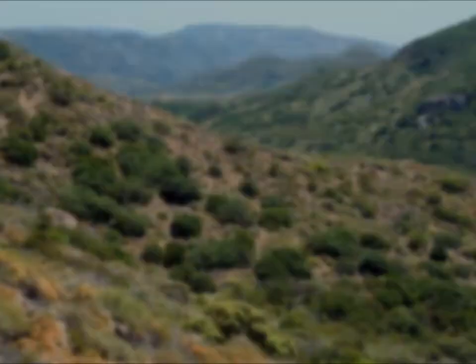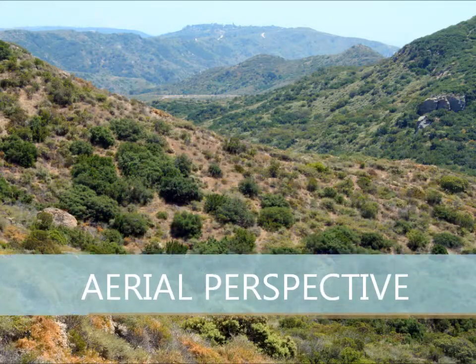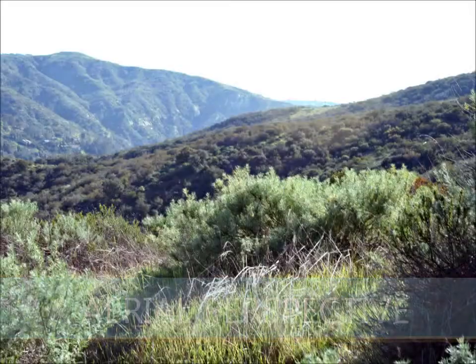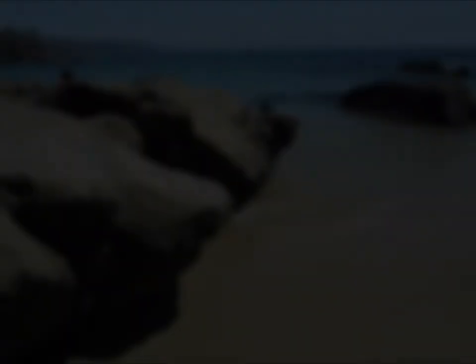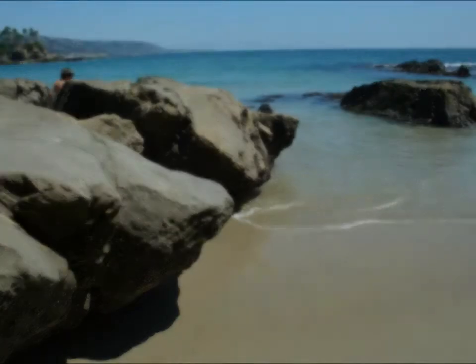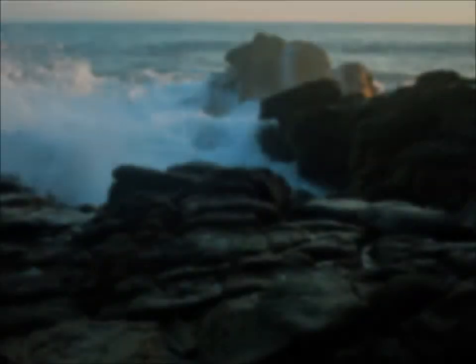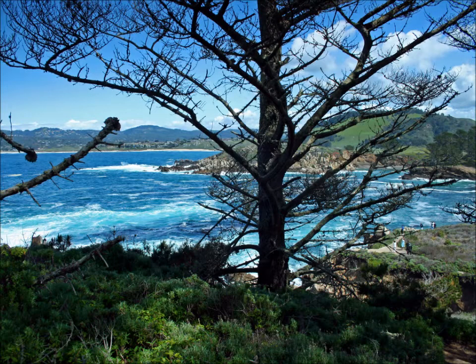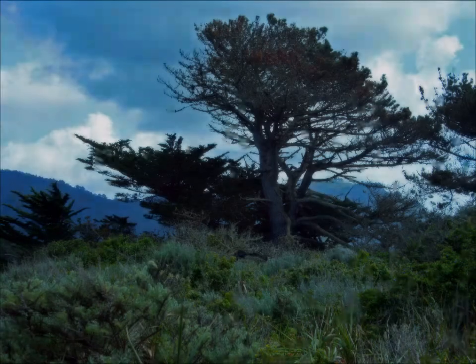Aerial perspective is the shifts of value and color seen with distance, so distant objects have less value contrast and more color contrast. We're talking about usually warm to cool between the shadows and light areas, and they're also usually lighter and more blue.